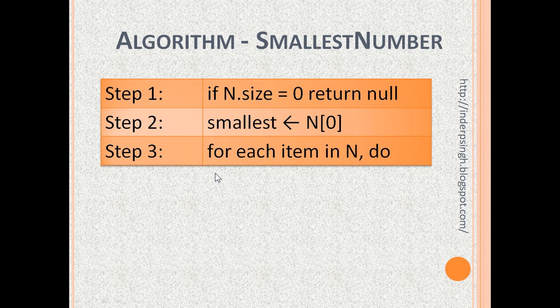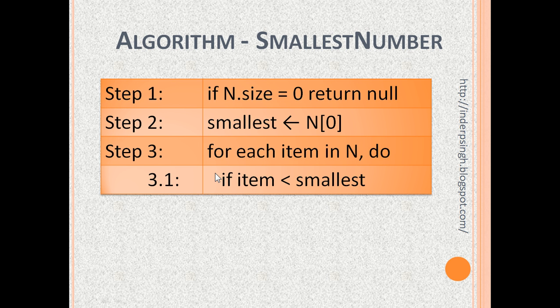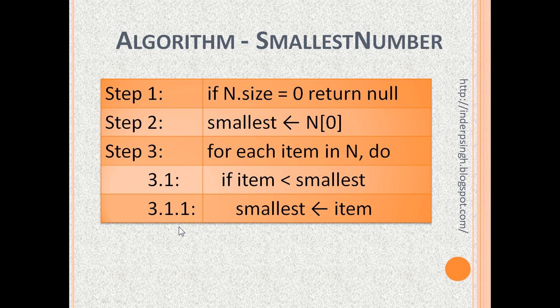Step 3: Loop through each item in the list n. Step 3.1: Check if the current item is less than smallest. Step 3.1.1: If yes, meaning if item is less than smallest, assign item to smallest.